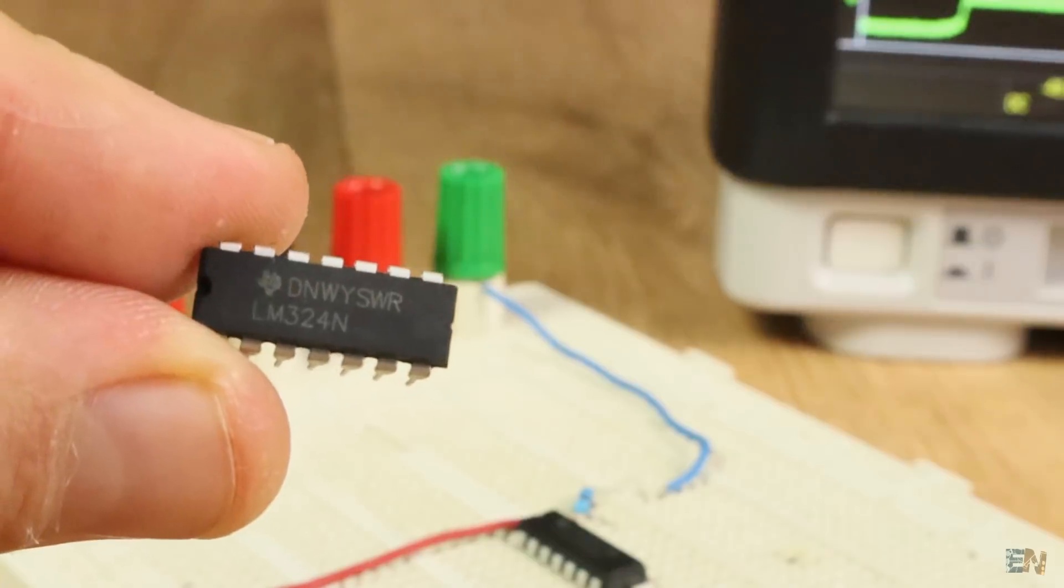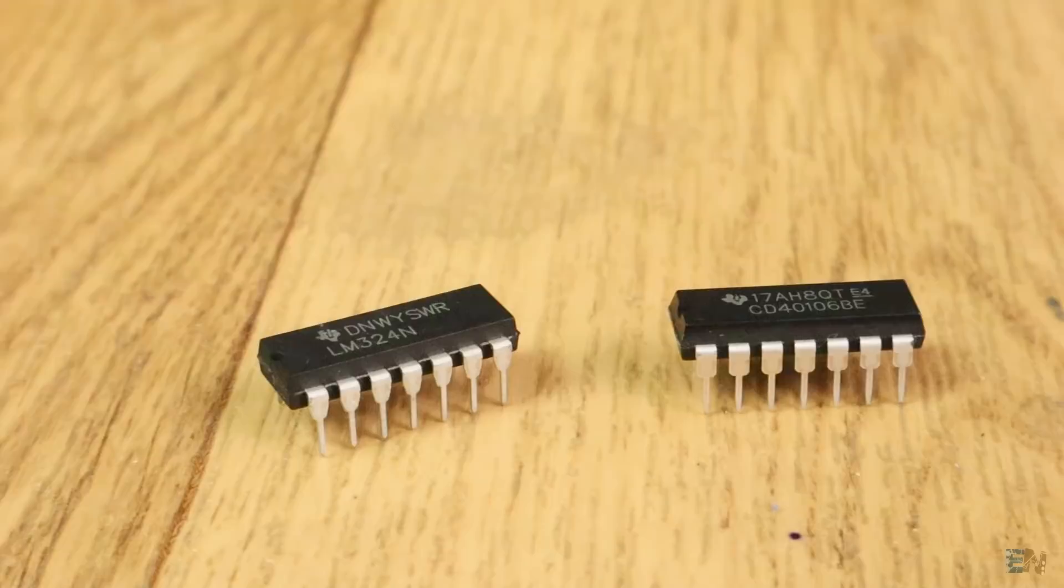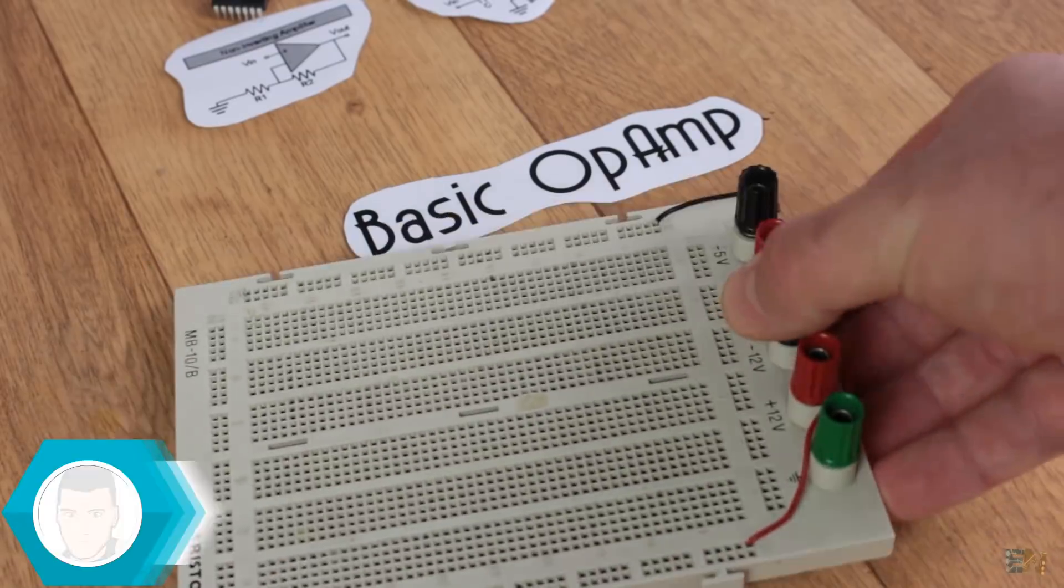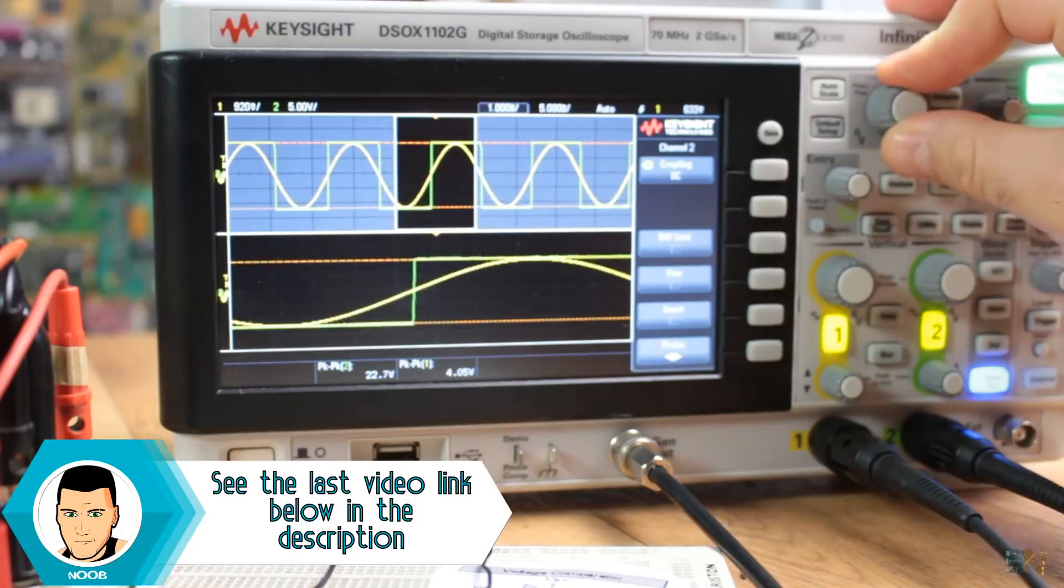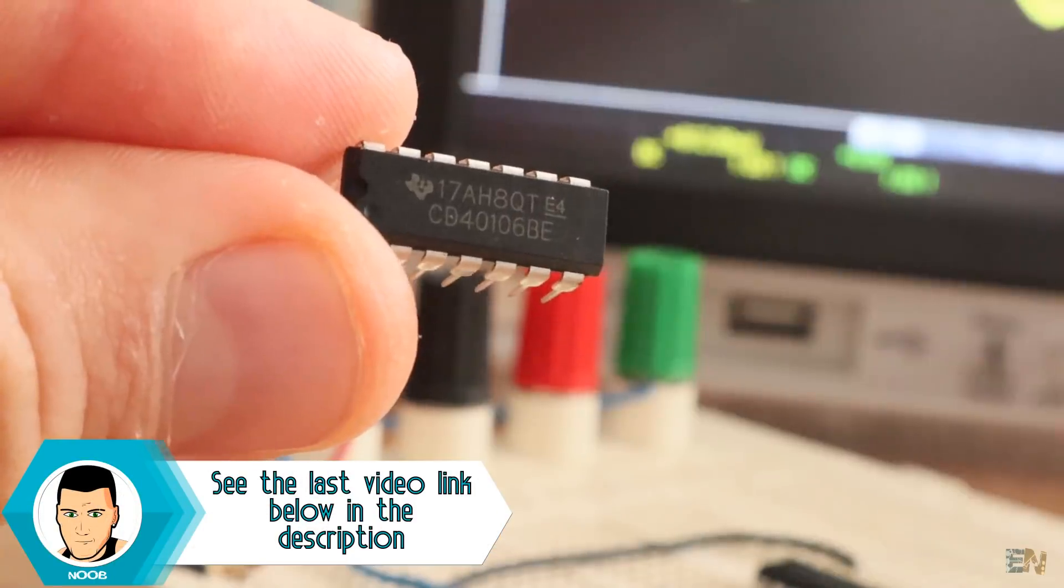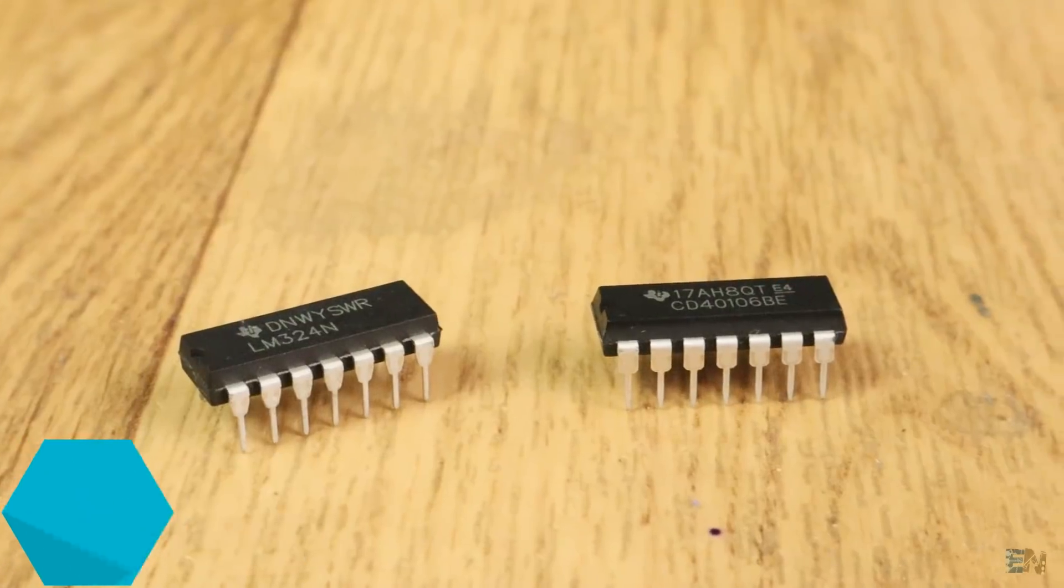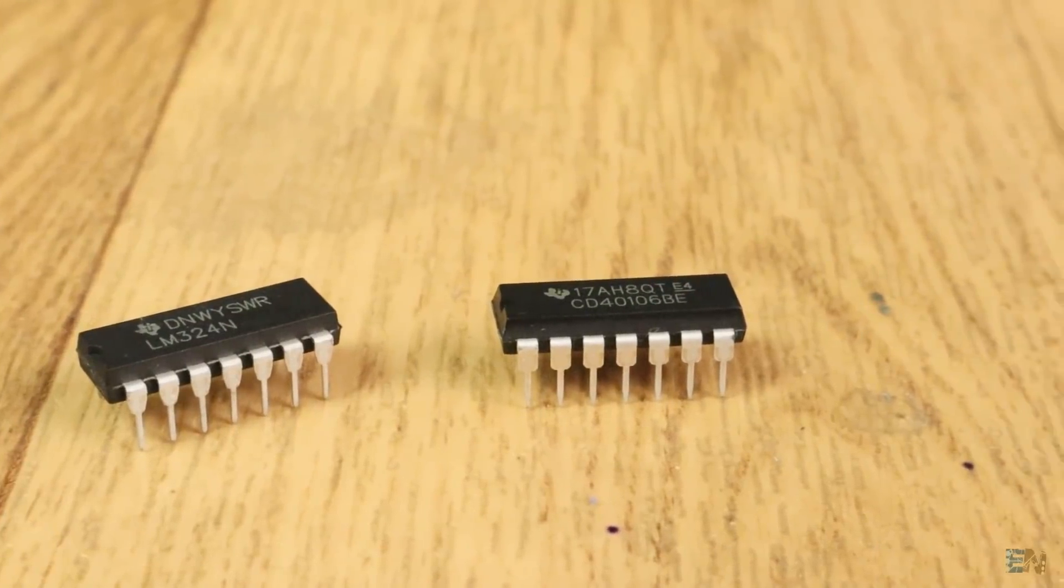It's been a while since our last basic components video, right? Last time we saw the operational amplifier and how to use it. Well now, this is a Schmidt trigger inverter, the CD40106B, and that's what we will see in today's video.